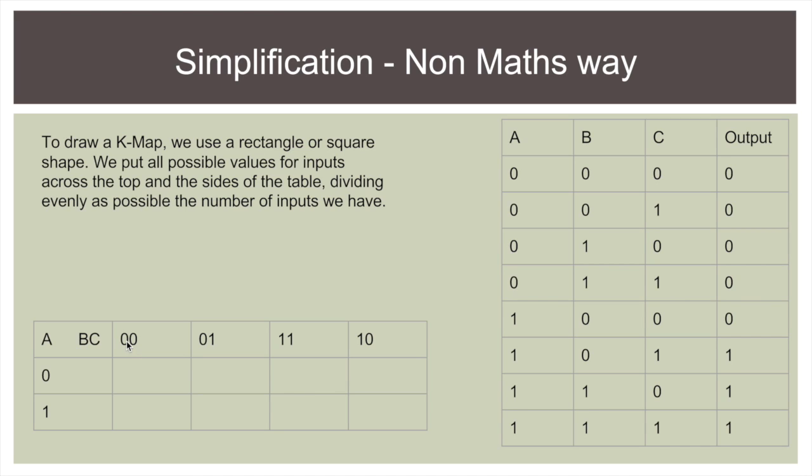Now we write this in an interesting way. We write it so that we're only changing one variable at a time. So we've got 0 0 and we write 0 1 because here B doesn't change. C does change to 0 and 1 because these numbers all relate to these inputs, obviously.